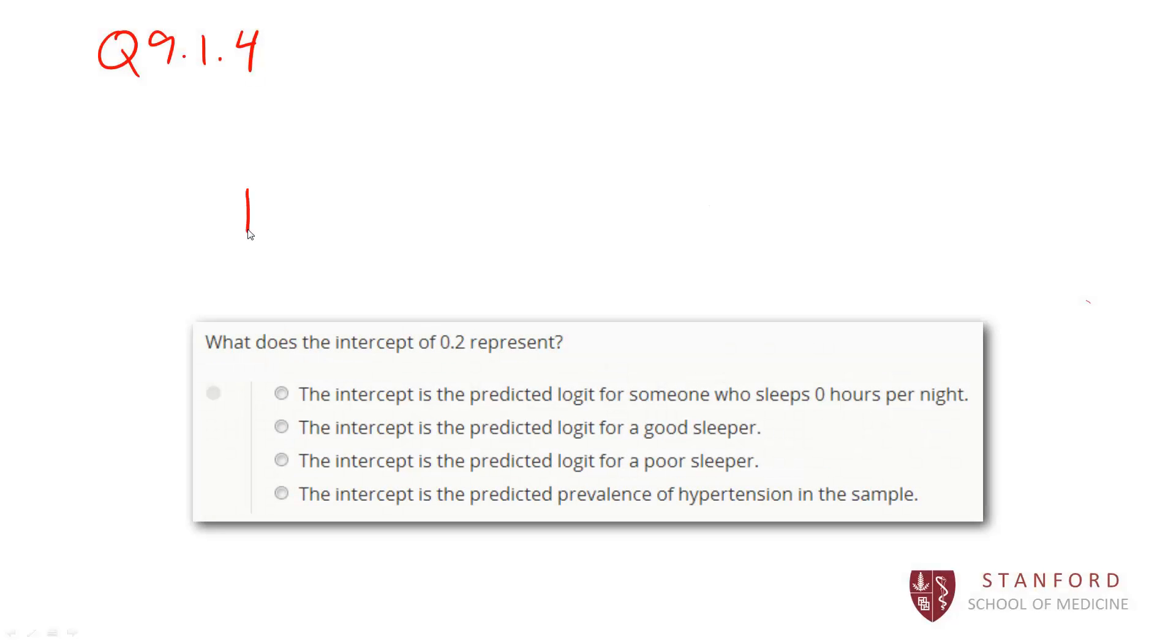The researchers fit a model here that the log odds of hypertension, that's our binary outcome, is equal to our intercept is 0.2, and our slope is negative 0.2 times the sleep duration. This is a continuous predictor. So what does the intercept actually mean here? Well, the intercept alone is only going to be applied when our sleep duration is equal to 0.